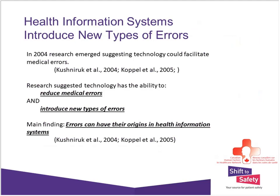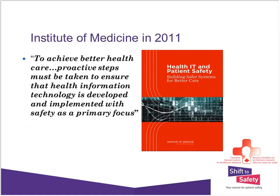What we have found is that health information systems can actually introduce new types of medical errors. The first publications in this area were in 2004. North American researchers Robert Powell and Andre Christian conducted studies looking at whether technology could facilitate or introduce new types of medical errors. What they found was that errors can have their origins in the health information systems that people use. From a chronological perspective, 2004 saw the first publications on health information technology safety, and since then many more publications have appeared in the literature.